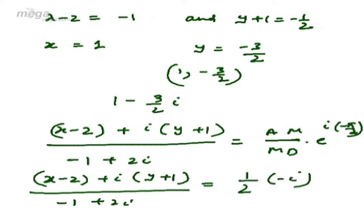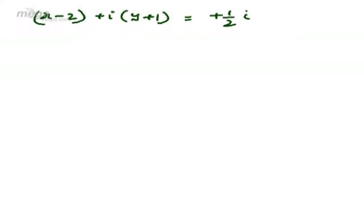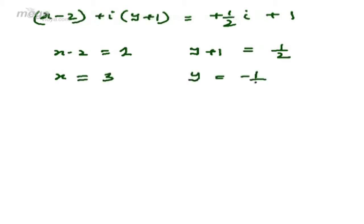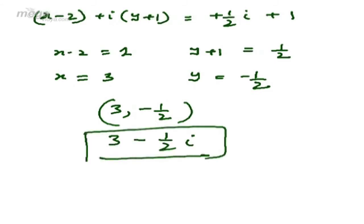This equals (1/2)·(-i), so (x-2) + i(y+1) = (1/2)i·(-1+2i) = 1 + (1/2)i. Comparing: x-2 = 1 and y+1 = 1/2, so x = 3 and y = -1/2. The second position of point A is (3, -1/2), represented as 3 - (1/2)i. So this objective-type question has two answers: first and fourth, that is A and D are the right answers.